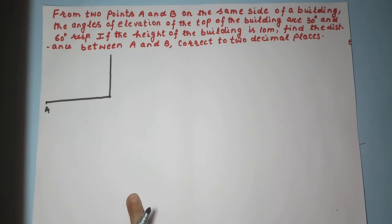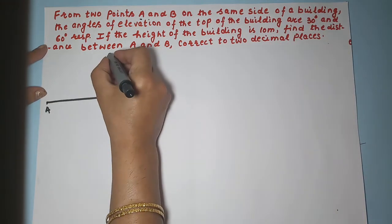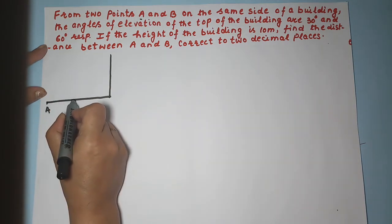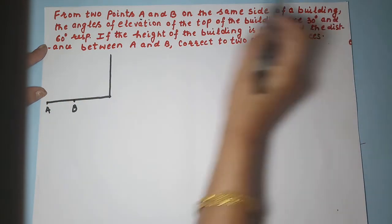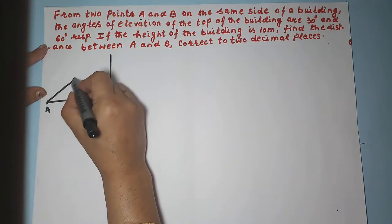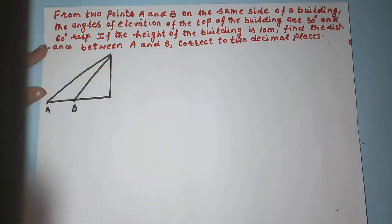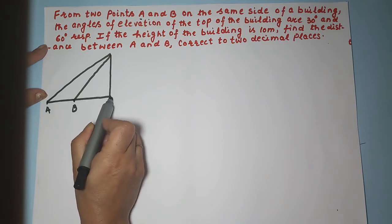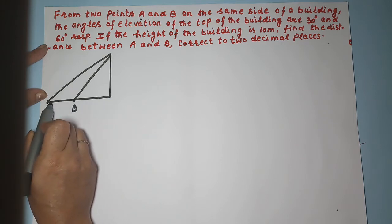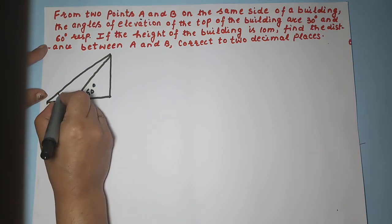In this video, we will continue learning heights and distances. Looking at the question: from two points A and B on the same side of the building, the angles of elevation of the top of the building are 30 and 60 degrees respectively. As you move towards the tower, angles of elevation increase; moving away, they decrease. So the closer point has 60 degrees and the farther point has 30 degrees.